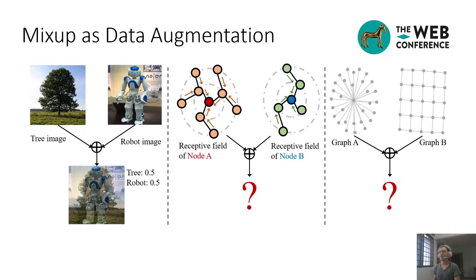In the middle, we see for node classification, to mix a pair of nodes A in red and B in blue, we need to mix their receptive field subgraphs. On the right-hand side, we see for graph classification, we need to mix the nodes and graph topology of a pair of graphs.